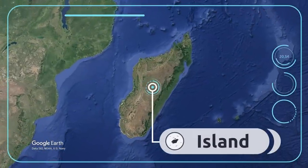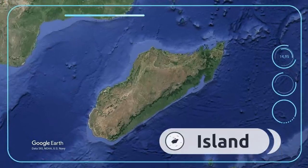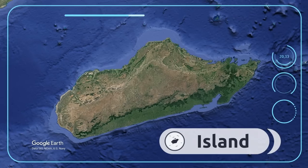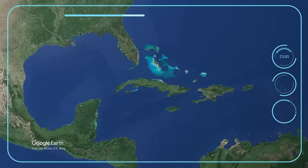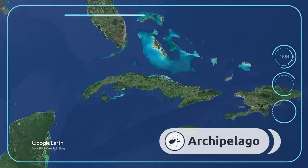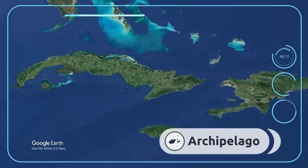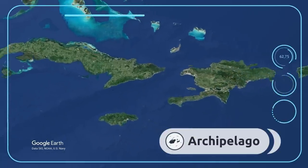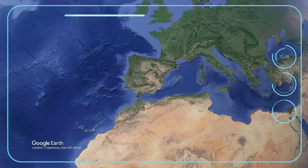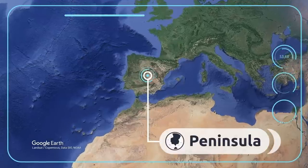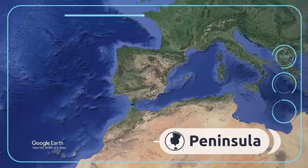An island is a tract of land surrounded by water — for example, the island of Madagascar in Africa. An archipelago is a group of many closely scattered islands — for example, the Caribbean Archipelago between North and South America.